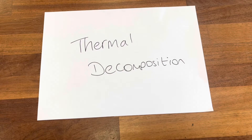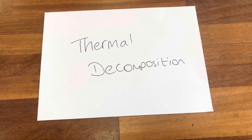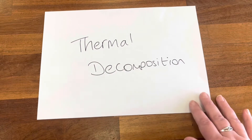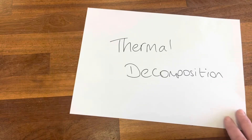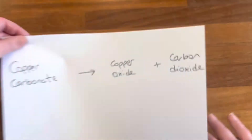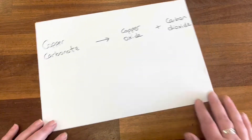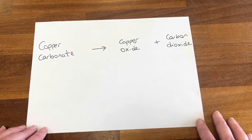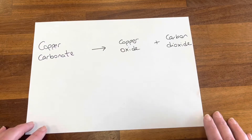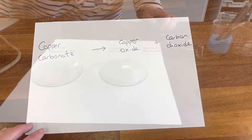I've got two examples for you. Our first example is copper carbonate. We're going to heat copper carbonate and it will decompose to form copper oxide plus carbon dioxide.